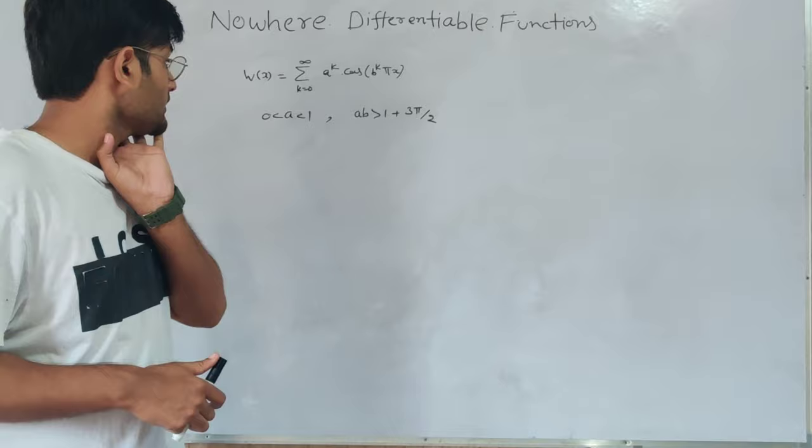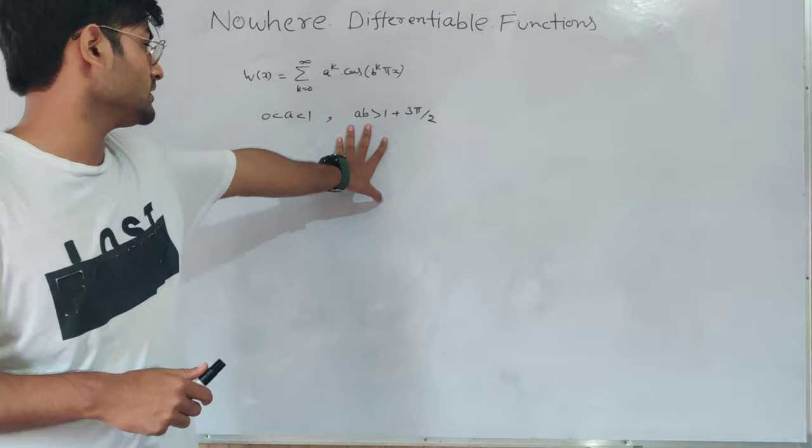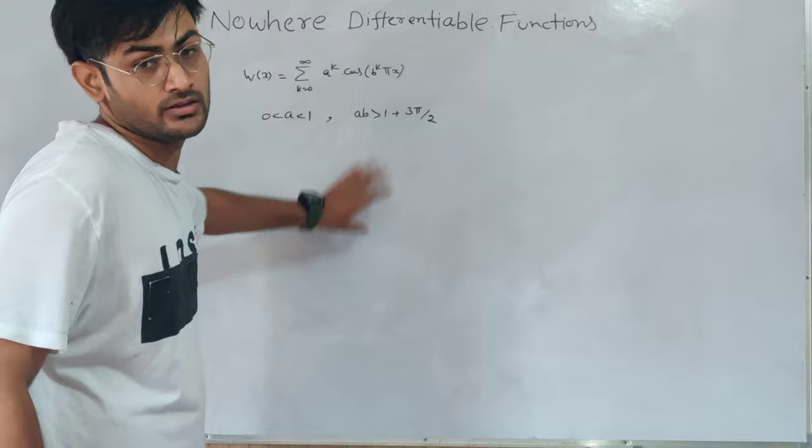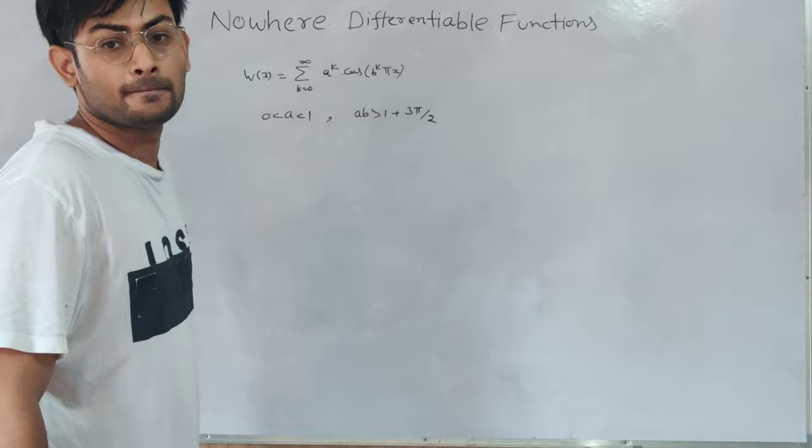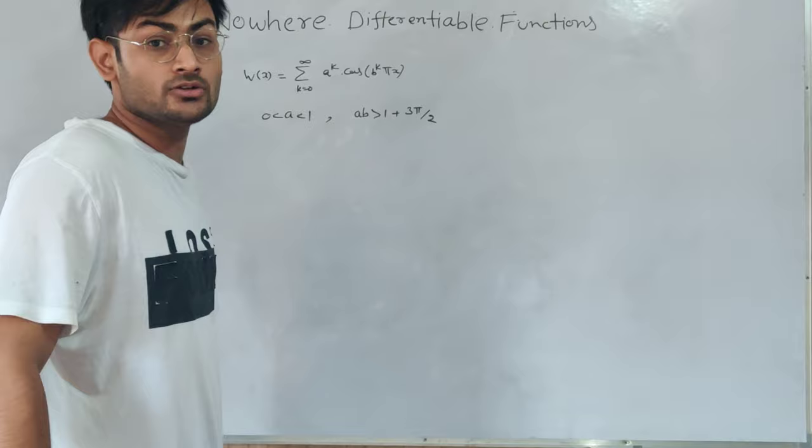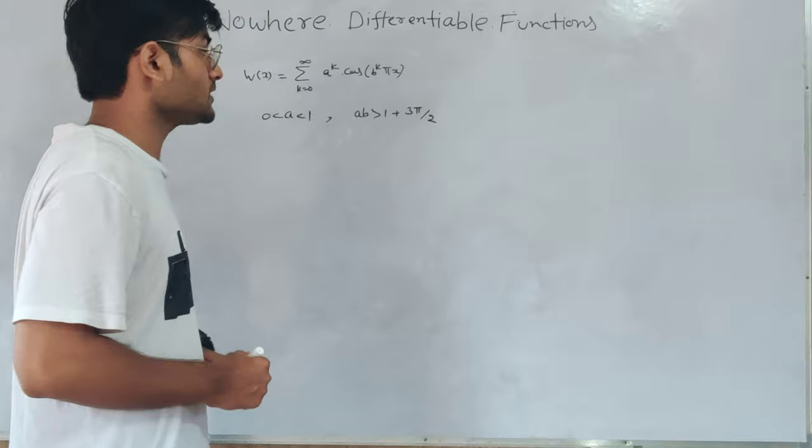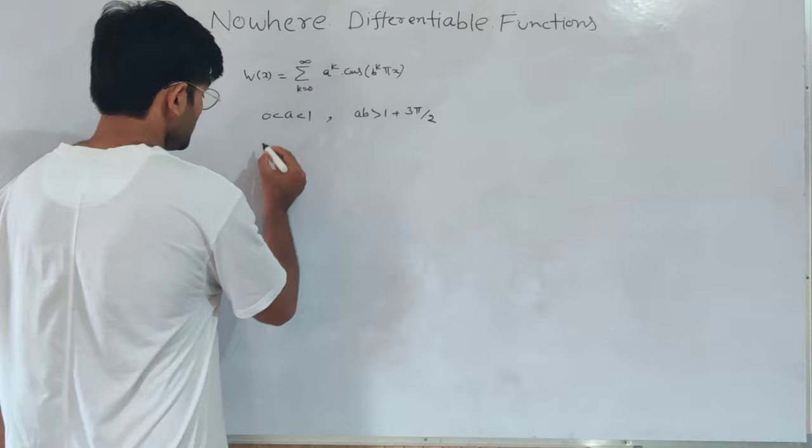And after that, Alimban sir and other mathematicians have been given a condition with both a and b. But after that, the condition is only on b. Actually, it was not the first function which was nowhere differentiable. It was the first function which was published, but the first function was Bolzano and it was basically a geometrical function.